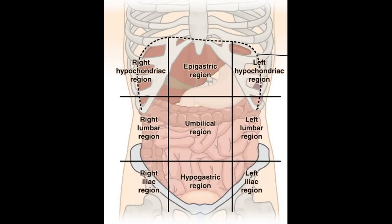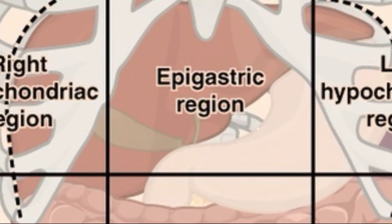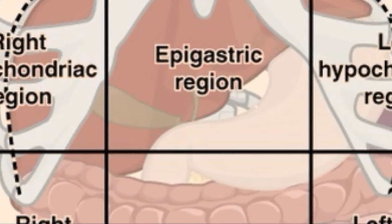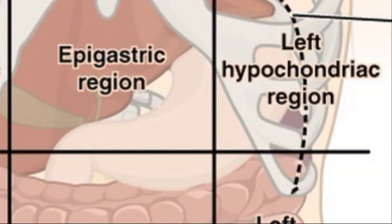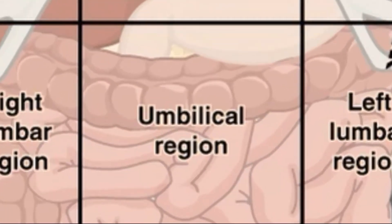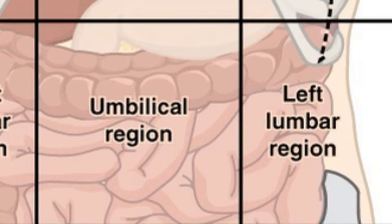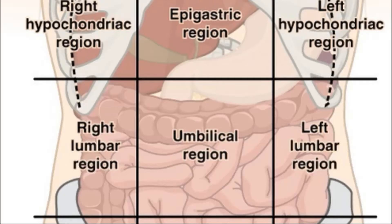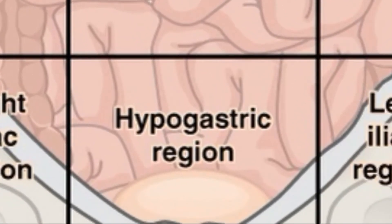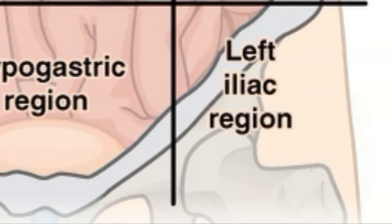Starting with the compartments — nine divided into three columns. On the top you have the epigastric region, then the right and left hypochondriac regions. In the center you've got the umbilical region, then right and left lumbar regions. At the bottom you've got the hypogastric region, then right and left iliac regions.